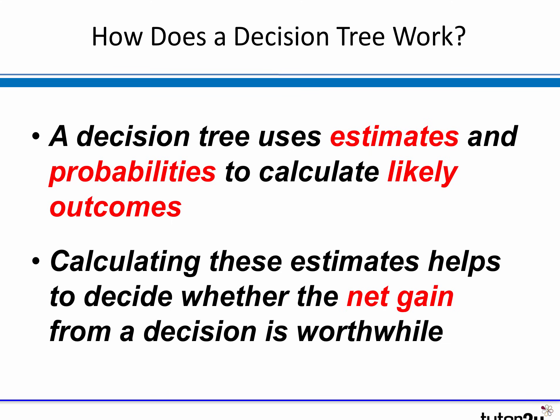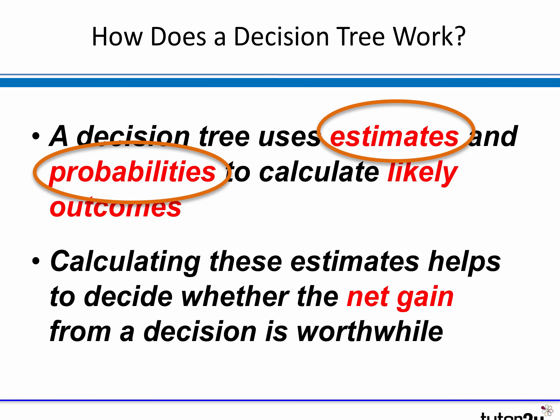The decision tree works by using a series of assumptions, estimates, and probabilities, from which we calculate likely outcomes. We calculate these estimates, add them all up, and try to work out what the net gain would be from each decision. It's worth remembering that a decision tree uses estimates and probabilities, so when we evaluate the outputs, we can usefully question whether these estimates have been made carefully, cautiously, or whether they're overly optimistic.